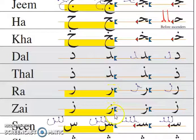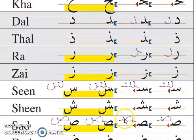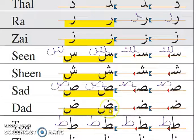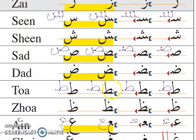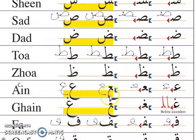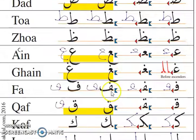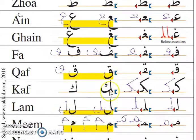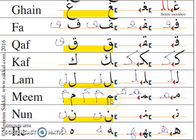Zay, Sin, Shin, Saad, Zad, Ta, Dha, Ayn, Fah, Kaf, Lam, Mim, Noon. Do chashmi he.